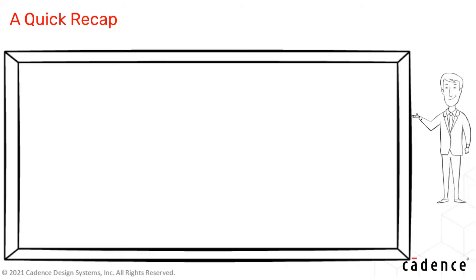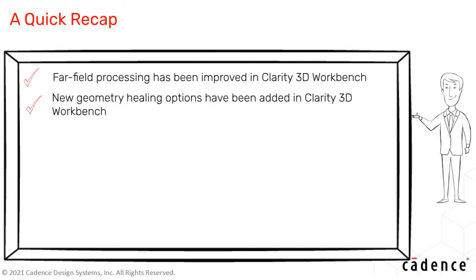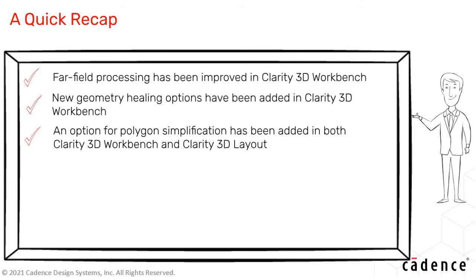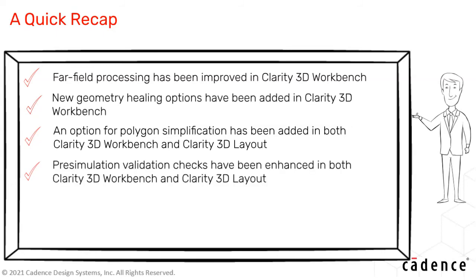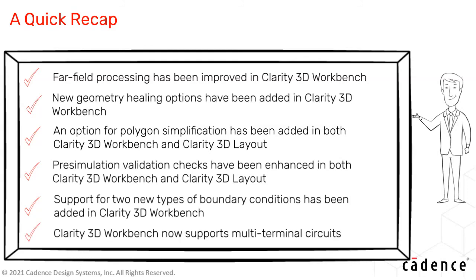Here's a quick recap of the new Clarity 3D Solver features: the performance of far field processing has been improved significantly; two new geometry healing options, Unhook Faces and Cover Sheets, have been added; a new Conservative option is available to improve polygon shape processing; more pre-simulation validation checks have been added; and two new boundary conditions — Impedance and RLC — plus support for multi-terminal circuits have been introduced.